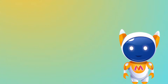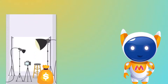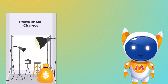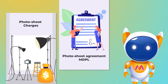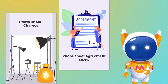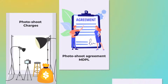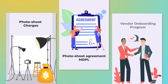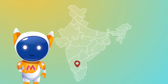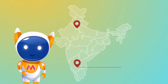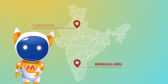In MAS, there will be some photoshoot charges and these can be found in the photoshoot agreement MDPL in the OPL portal. The same shall also be discussed with the vendor during onboarding under this program. Myntra studios are located under this program in Bangalore and Gurgaon.